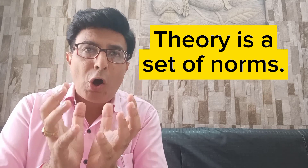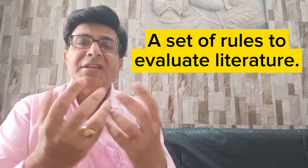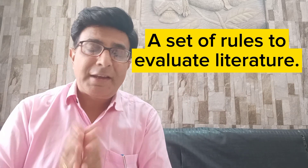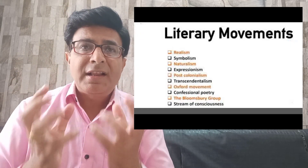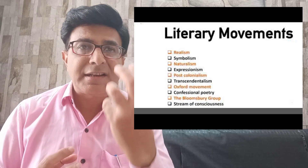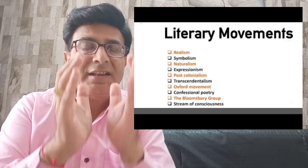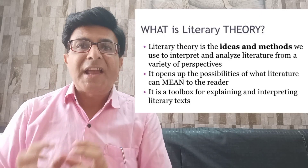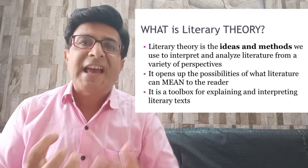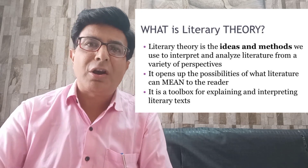So theory is a set of norms, a set of rules by which you evaluate a particular work of art written all through the history of English literature. In summary, a literary movement is found during one period of time — a change that you see during that period. Theory, on the other hand, is the norms of evaluating a work of art, which can be applied to any work of art all through the history of English literature.